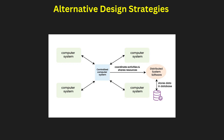Designing a distributed database system requires careful strategic planning to balance performance, scalability, and cost-effectiveness. There are three primary design strategies: top-down, bottom-up, and hybrid. In the top-down approach, the entire database system is designed first, followed by fragmentation and data allocation. Bottom-up involves integrating multiple local databases into a distributed system. The hybrid approach combines elements of both, allowing flexibility. Performance optimization, security, and fault tolerance play a significant role in selecting a design strategy.